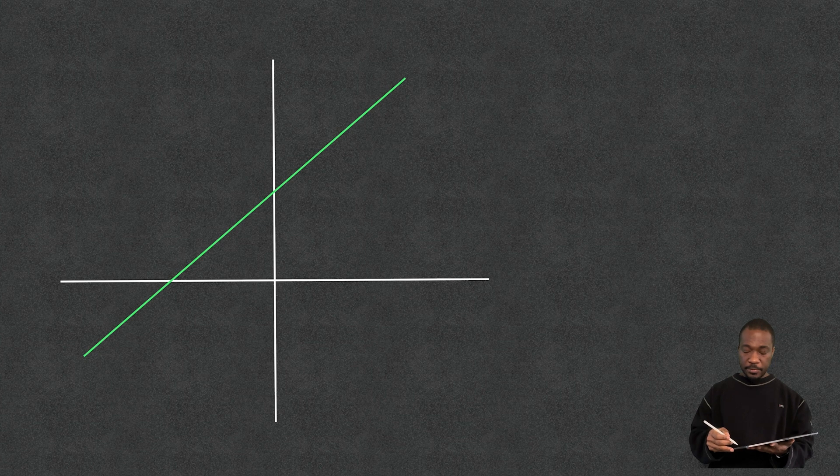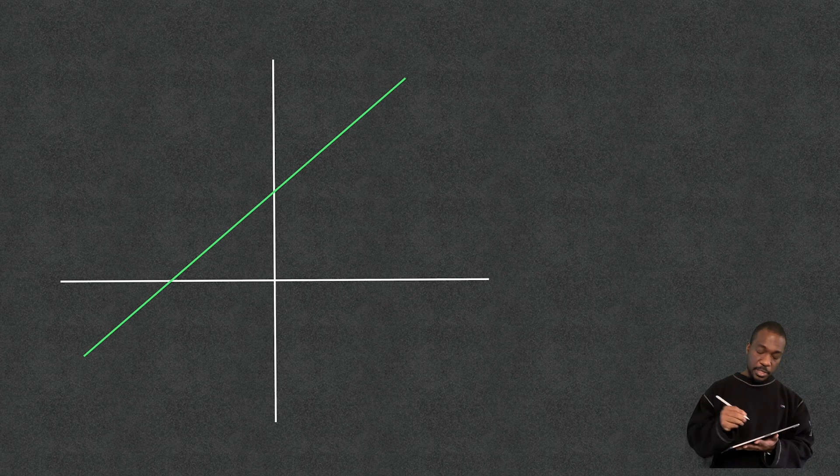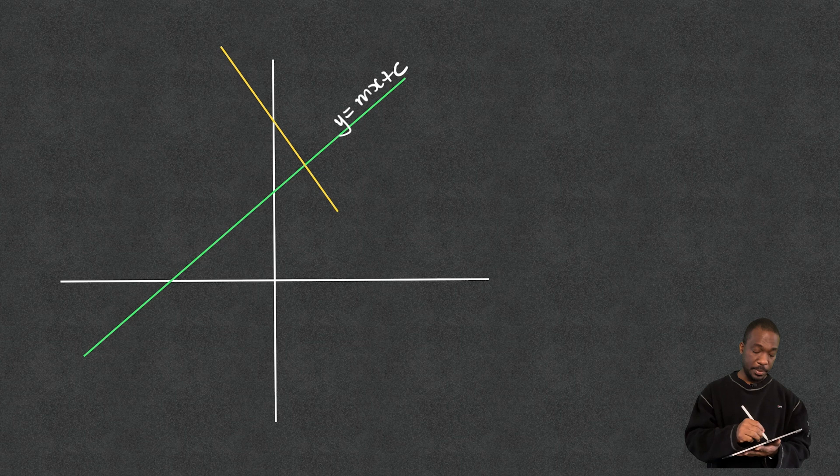Now there I've got a set of axes, my y axis and my x axis there, and I have got a line right there. Now when I write the equation of this line, y equals mx plus c, that's what it should really look like.